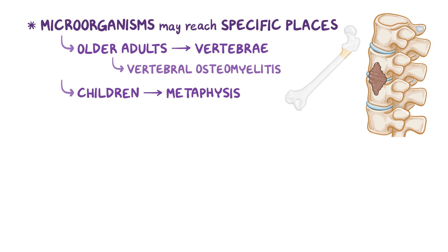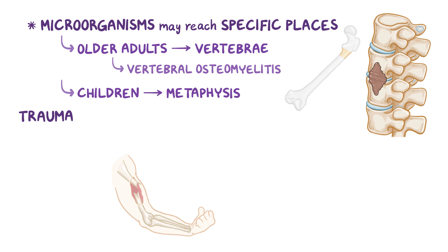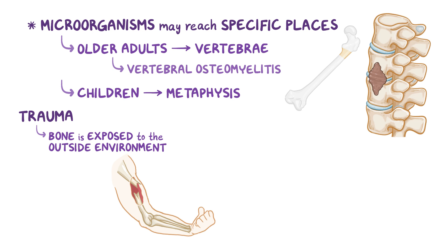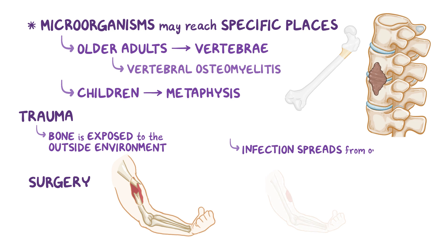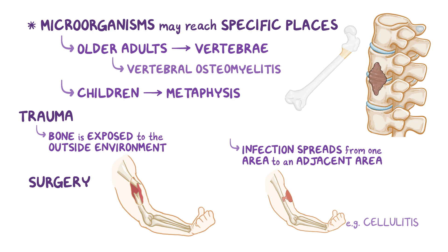The second way that bacteria cause osteomyelitis is through trauma. For example, in an open fracture after an accident, the bone may get exposed to the outside environment and come into direct contact with bacteria. A third way is during surgery, when bacteria are introduced into the bone. A fourth way is when an infection spreads from one area, like cellulitis — an infection of the dermis layer of the skin — to an adjacent area like the bone, and this is known as contiguous spread.